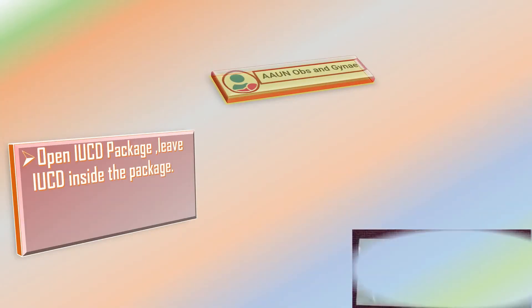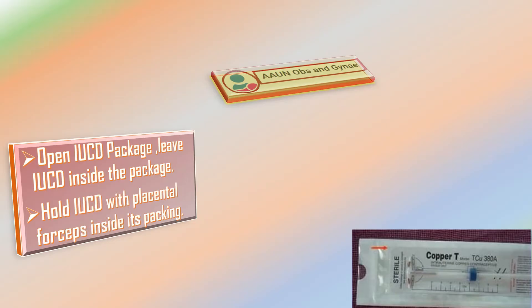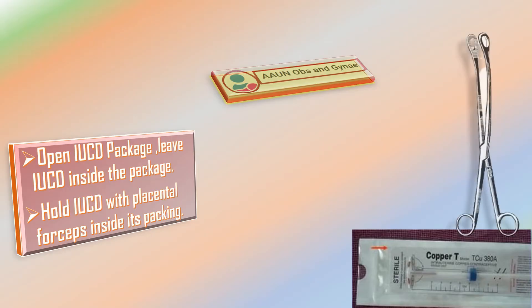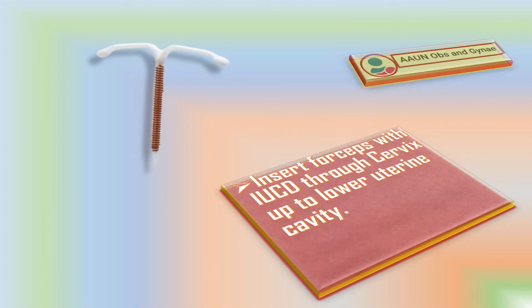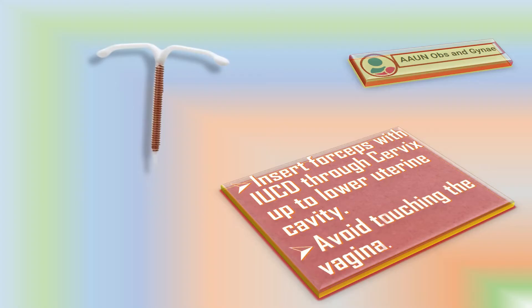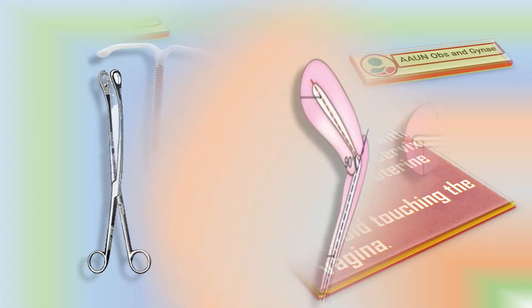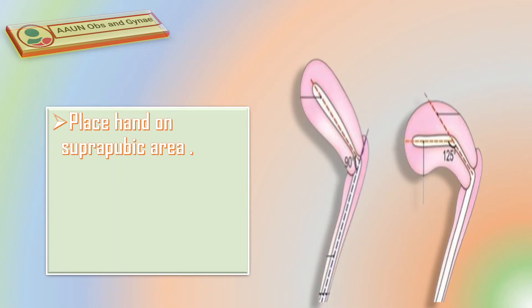I will grasp the anterior lip of the cervix with a ring forceps. I will open the IUCD package, remove the applicator and insertor from the package, and leave the IUCD inside the package. I will hold the IUCD with placental forceps inside its packing. Then I will insert the forceps with IUCD through the cervix up to the lower uterine cavity, avoiding touching the vagina. I will then place my hand on the suprapubic area with fingers towards the fundus.